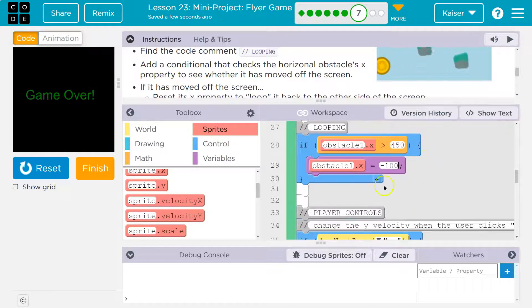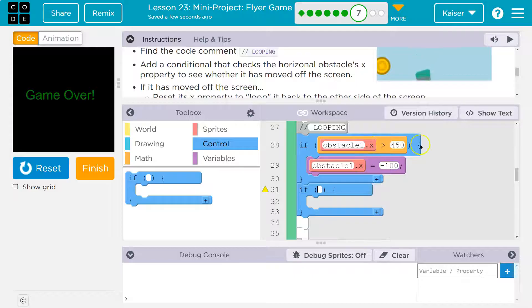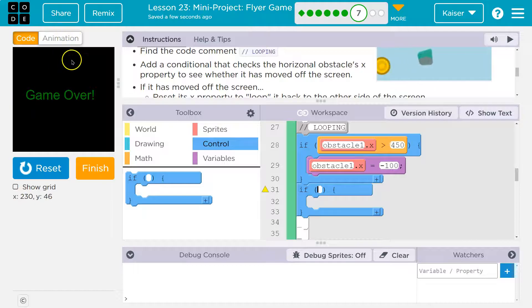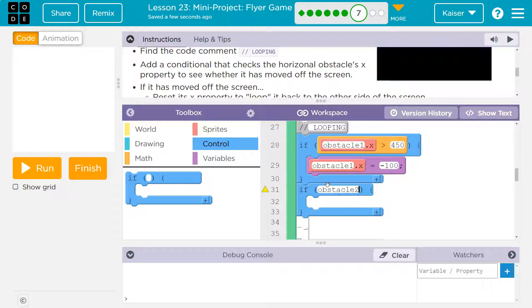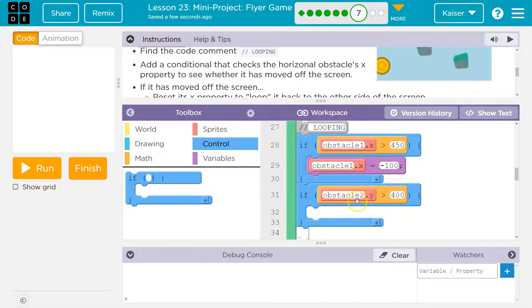All right, so now same principle for the other obstacle, except this time it is y. I need an if. I'm not going to be checking if it's greater than 450; I'm going to be checking—it starts at 0 y right up at the top. What's y way down here? Y is 400 when you go down here. So that would mean if obstacle 2 dot y is greater than 400, it's off the screen. What do we want to do? I want to place it back up here.